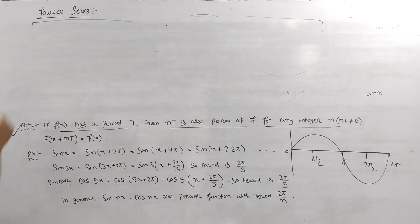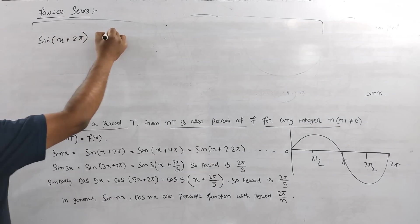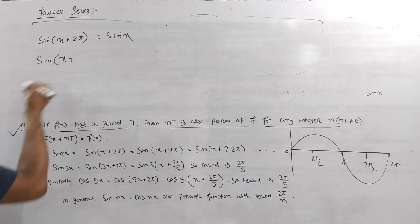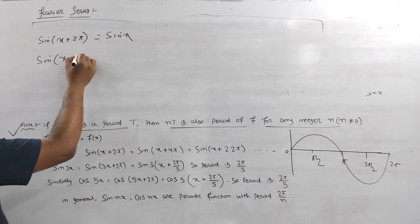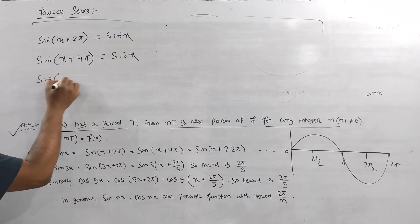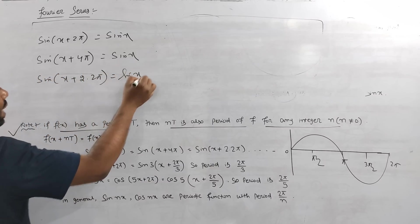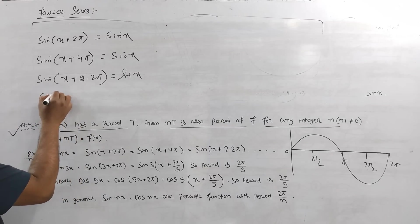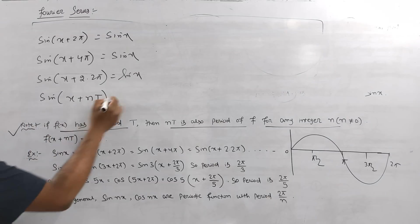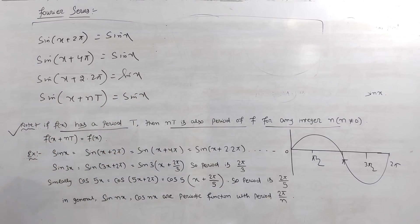For example, sine x: sine(x + 2π) = sine x. Then sine(x + 4π) = sine(x + 2π) = sine x. So sine(x + nT) = sine x, where T is 2π. Therefore f(x + nT) = f(x).